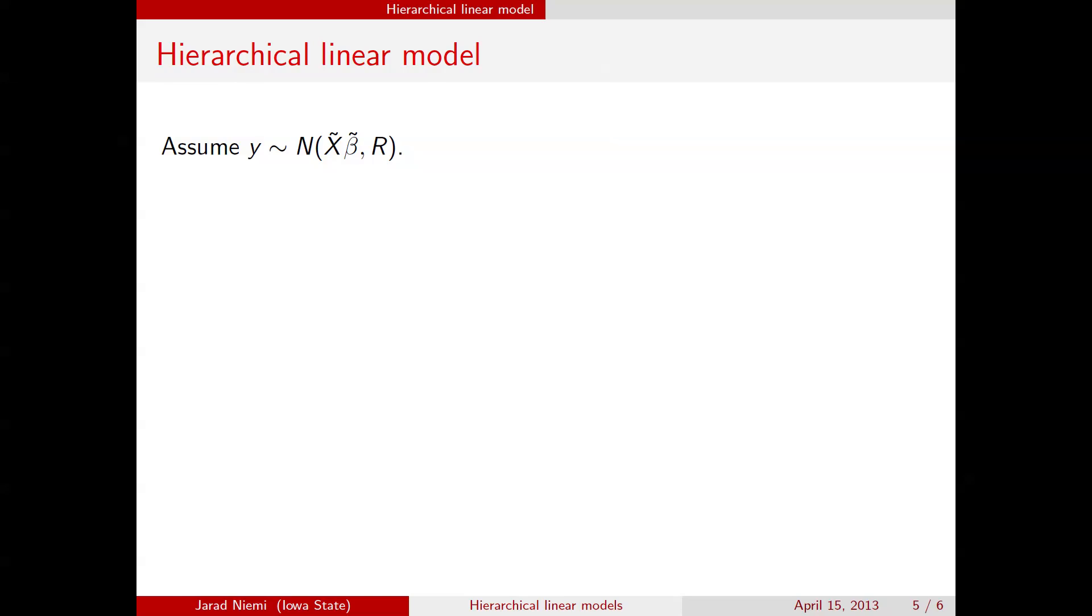And so here now we've assumed normality for the data, so the data has mean X tilde beta tilde, and after we've accounted for that, a variance-covariance matrix R. And so in order to perform a Bayesian analysis, we obviously have to put a prior on our unknowns. Our unknowns at this point are beta tilde and R. For the purpose of this slide, we're just going to focus on the prior that we're putting on beta tilde and just say that, yes, there would be a prior on R.